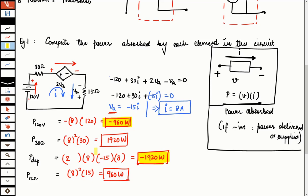This was shown so that we are on the same page regarding the power convention. You also now understand how to deal with dependent sources: just plug in the value of the dependent variable and substitute. Because these are all linear circuits, the terms are linearly related and you will always be able to substitute and solve.